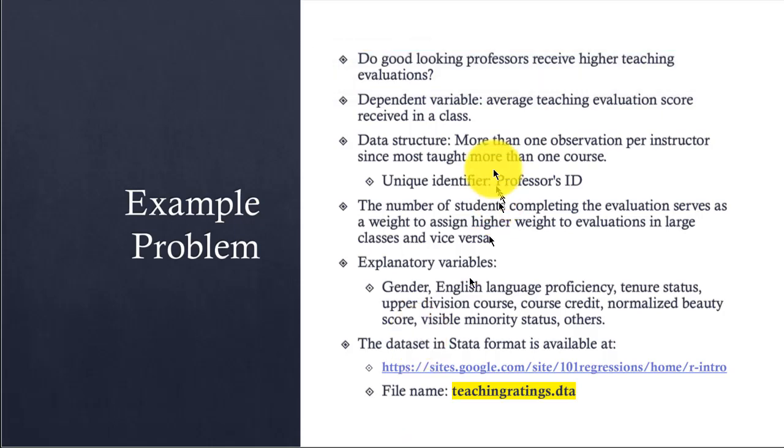Our dependent variable in this case is the average teaching evaluation score received in a class. The data structure is such that a professor may have taught more than one class, so there are multiple teaching evaluations recorded for each professor. We will have to account for this by using the unique identifier for each professor, which is the professor's ID.